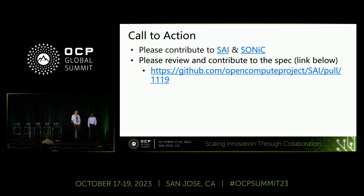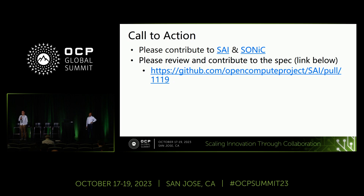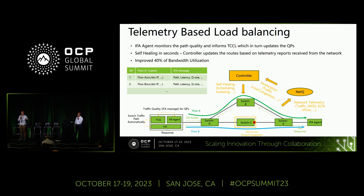A follow-up comment about exercising the number of spine switches. A second audience member asked: You specifically mentioned path and not a flow - path is a logical entity, could you explain what you mean by path? Is it a QoS path? The presenter explained: For each QP, the endpoint maintains a flow tuple and the quality of that QP's current path. So it is per flow - QP is per flow.